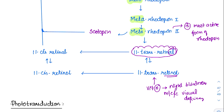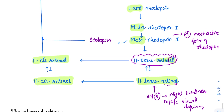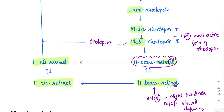All-trans retinol can be converted to 11-cis retinol. When 11-cis retinol combines with scotopsin, they can again form rhodopsin. So as we enter darkness, more and more rhodopsin is formed, increasing sensitivity. This reaction is continuously happening.